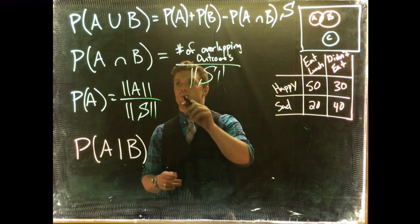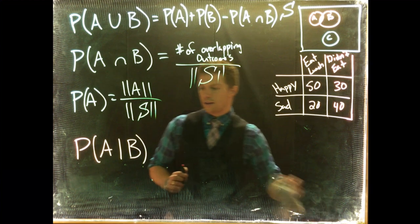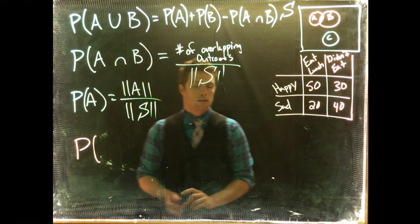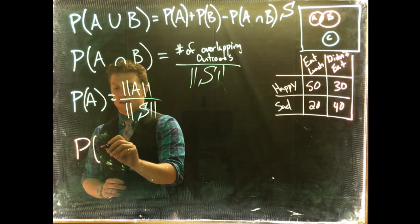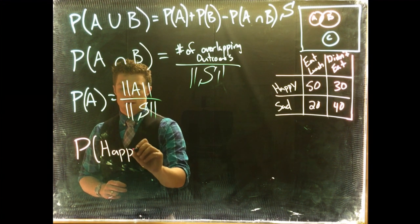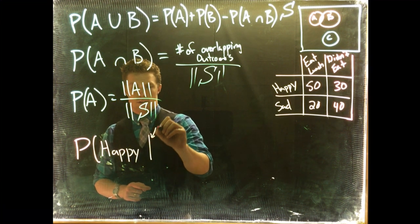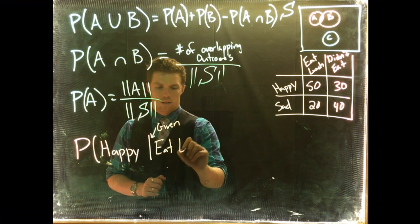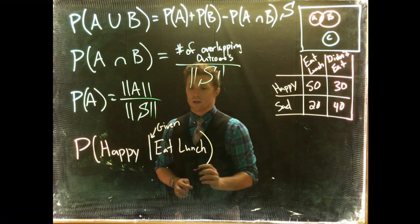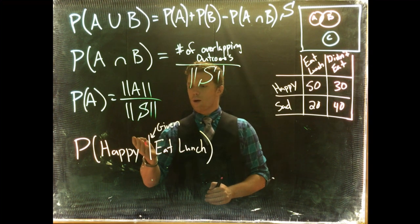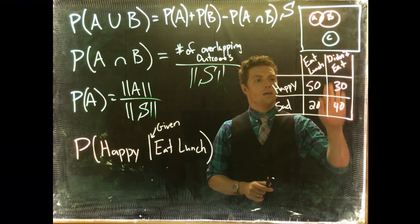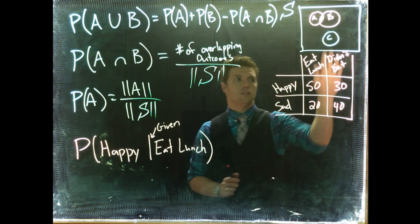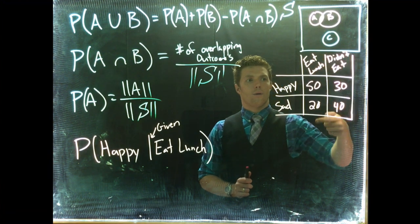Okay, so if we were to do this given, let's instead of using letters, let's actually go ahead and write this in words. So what is the probability that you are happy given that you have eaten lunch? When we say the probability of being happy given that we have eaten lunch, we are only interested now in people who have eaten lunch, because we said that that has already happened. We're now only interested in our eat lunch column.